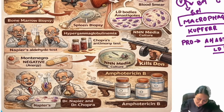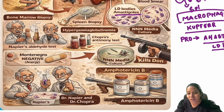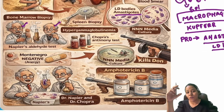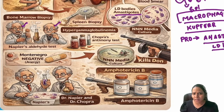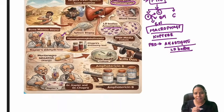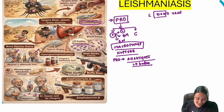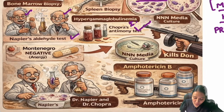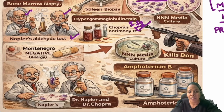The two doctors are Dr. Napier and Dr. Chopra. When drawing blood, they notice the blood is thick and wonder why. They perform two tests: Napier's aldehyde test and Chopra's antimony test. Both tests detect increased immunoglobulin, or hypergammaglobulinemia.